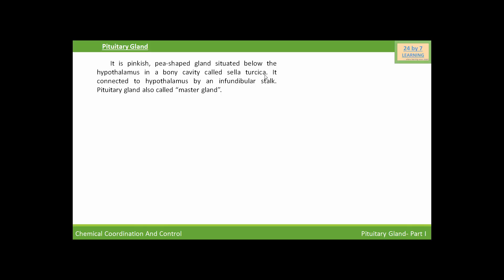called the sella turcica. It is connected to the hypothalamus by the infundibular stalk. The pituitary gland is also called the master gland because it controls all the body processes. Anatomically it is divided into two parts: number one is adenohypophysis and the second is neurohypophysis.